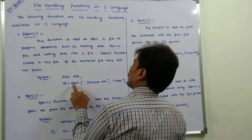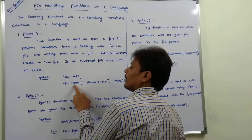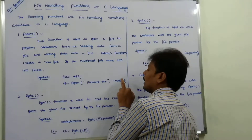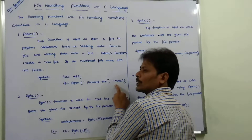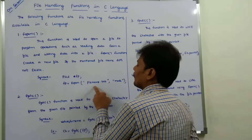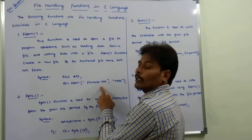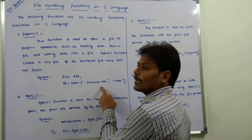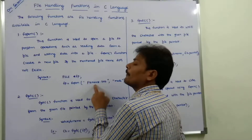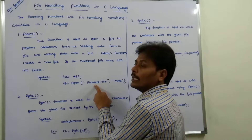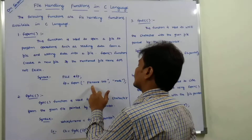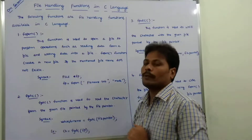Here, fopen is used for opening the file in the specified mode. We have three modes: read mode, write mode, and append mode. If the given file already exists, it is opened in the corresponding mode. If the file does not exist, a new file is created with that name.